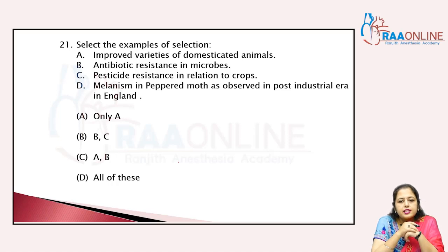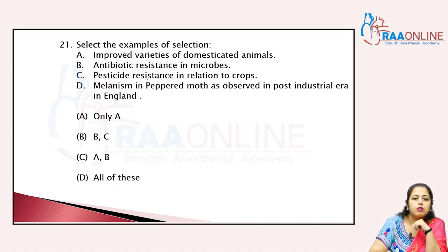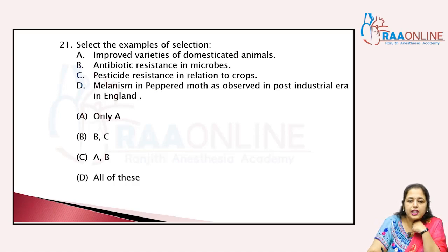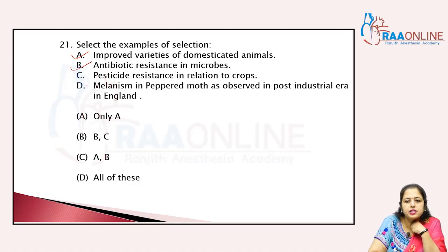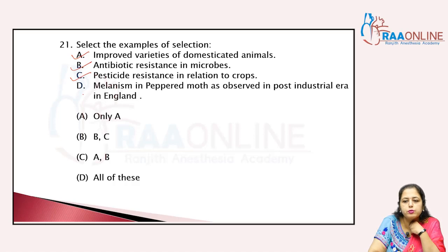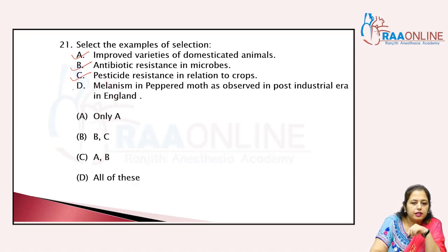Select the examples of natural selection: improved varieties of domesticated animals — exactly; antibiotic resistance in microbes — correct; pesticide resistance in crops — correct; melanism in peppered moths as observed in the post-industrial era in England — correct. All these are examples of natural selection, so the answer is all of these.